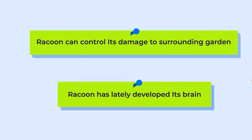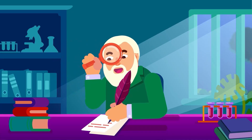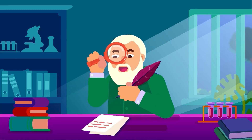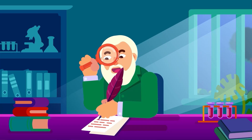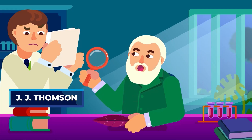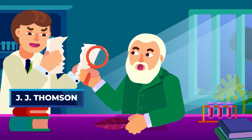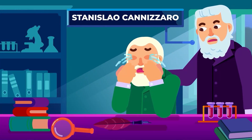In other words, an assumption that a condition is true is a postulate, and a plausible explanation of the phenomenon, which may contain a postulate, is a hypothesis. A postulate can also be proven to be incorrect as the investigation progresses. Dalton's postulates are one of the examples, yet his postulates are still considered a significant contribution that initiated further research about atoms.